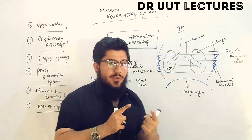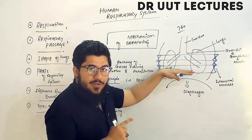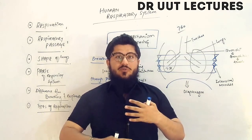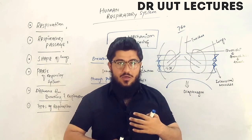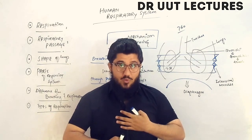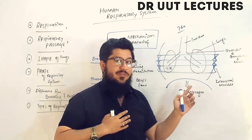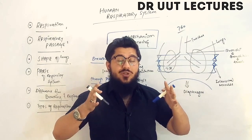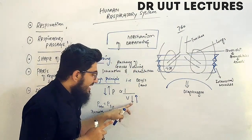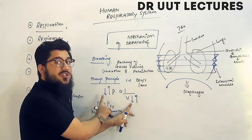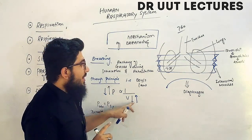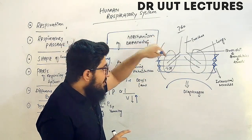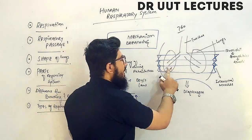During exhalation, the diaphragm relaxes and moves up, and the intercostal muscles also relax and move inward — the chest moves in and the abdomen moves out. Both muscles relax, which increases pressure on the lungs. The volume of the lungs decreases, and according to Boyle's Law, if the volume decreases, the pressure increases. So the intrapleural pressure shifts from 758 mmHg back upward.